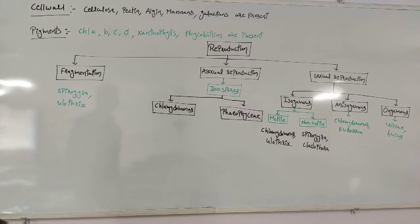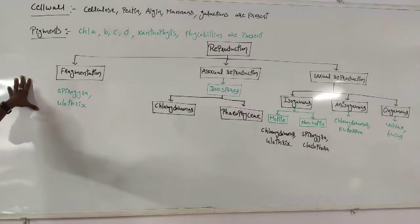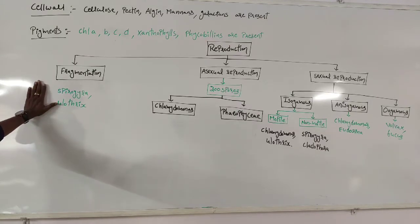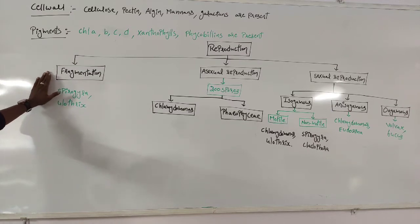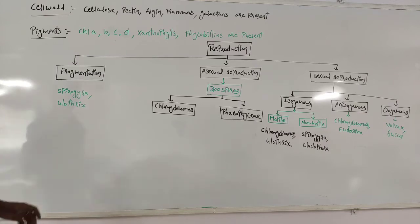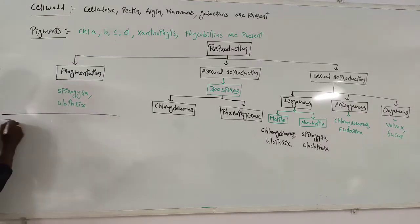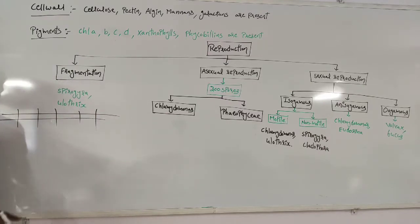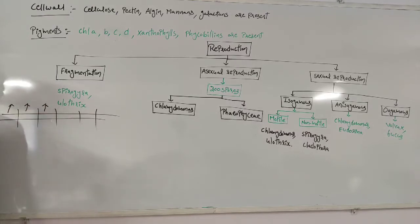Coming to reproduction: the very first one is fragmentation. If the body part is fragmented, each fragment has the capacity to produce a new organism. Fragmentation of Spirogyra is the best example. These are filamentous algae. If the body part breaks down, each fragment has the capacity to produce a new Spirogyra or new filamentous structure.